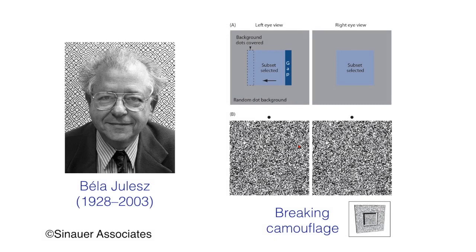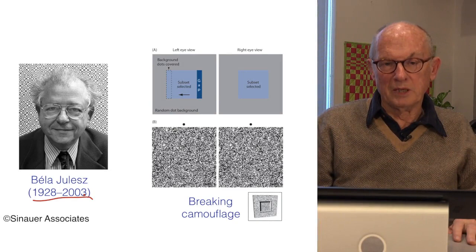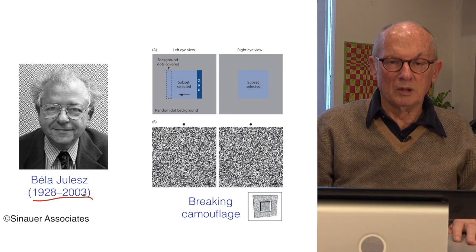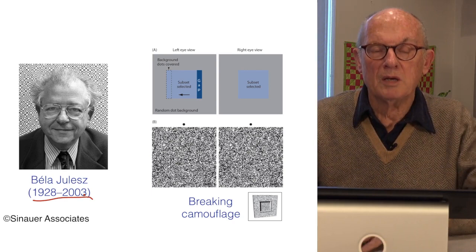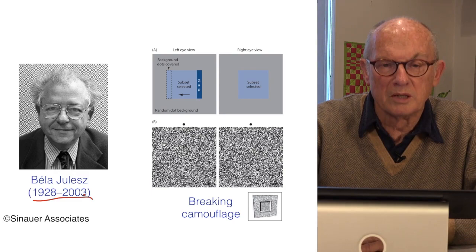The person who really developed random dot stereograms in the 1950s was Bela Julesz, who was not the first to actually discover random dot stereograms, but was the first to put it in digital form, allowing many researchers to make random dot stereograms with computer algorithms and test them in a whole variety of psychophysical circumstances, which Julesz did himself, but many others followed and made many observations that are relevant.